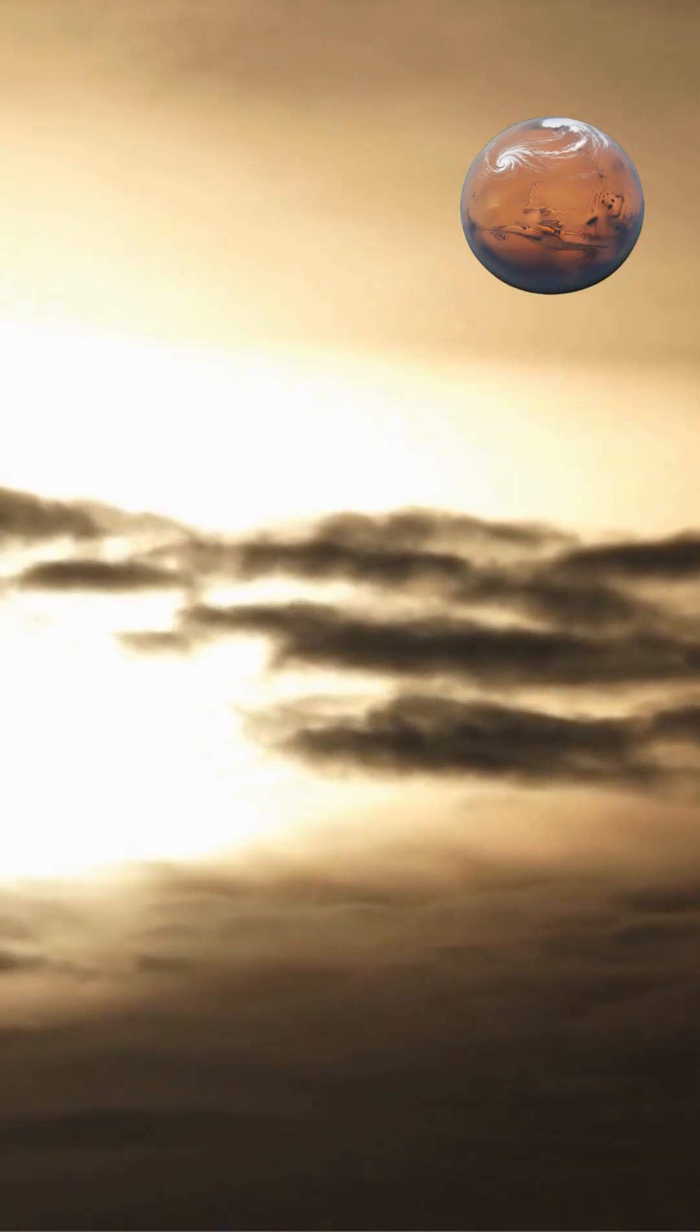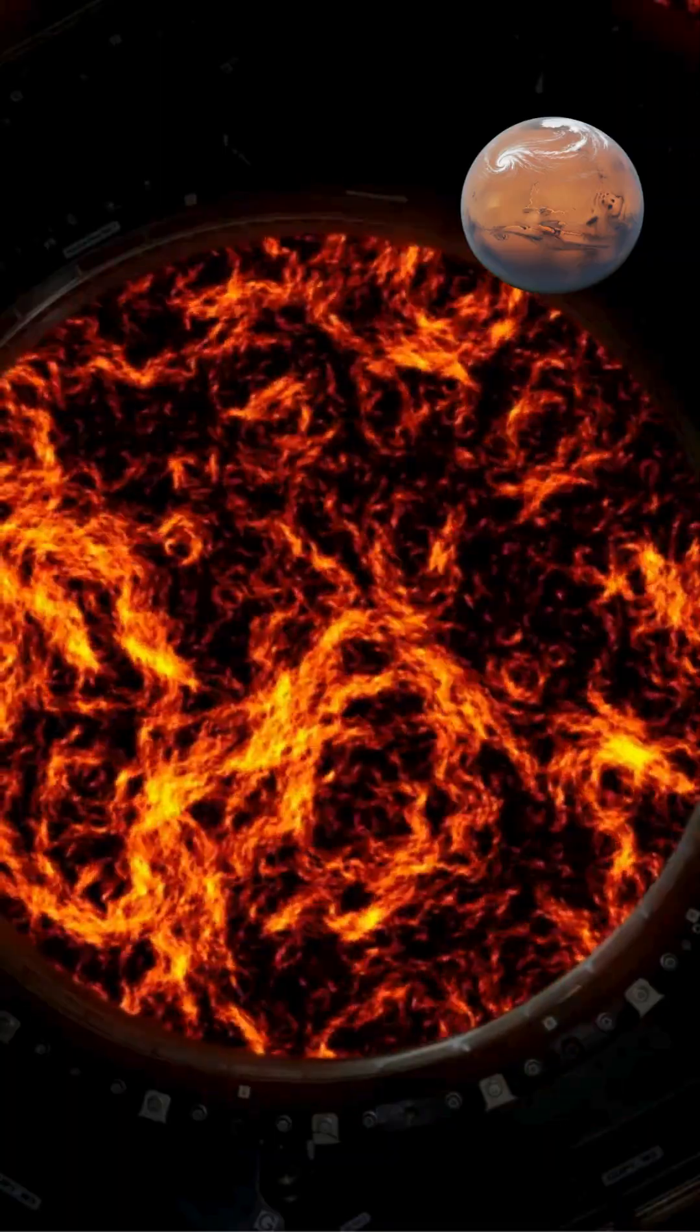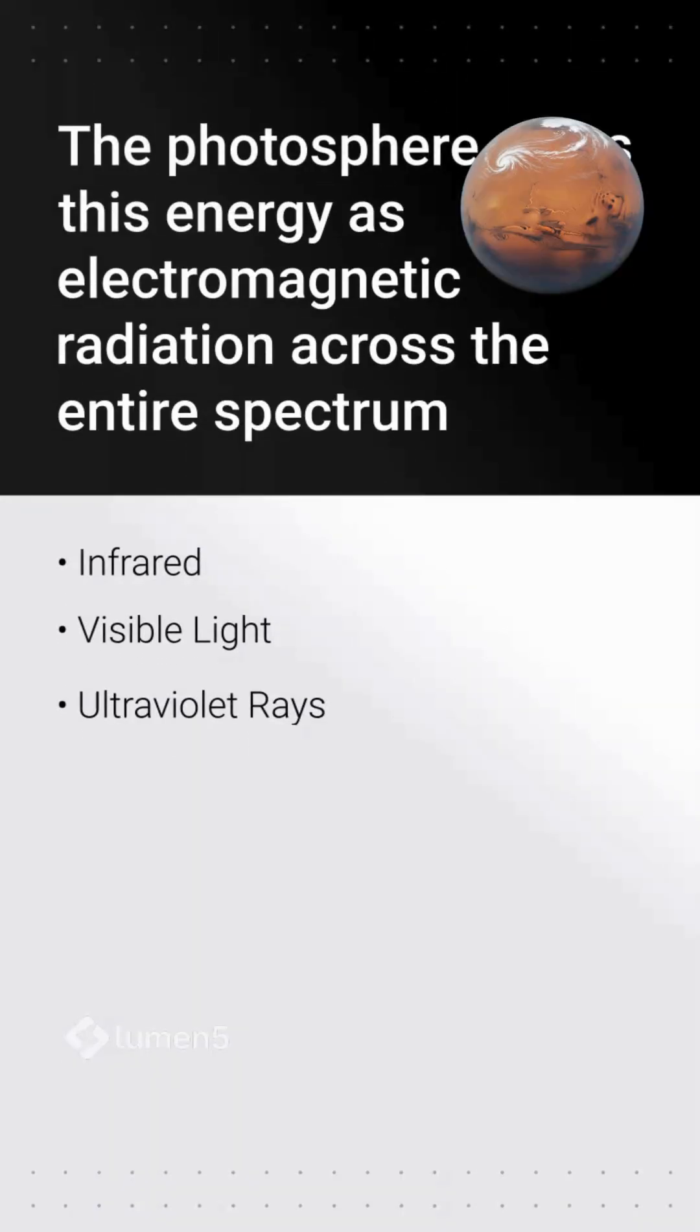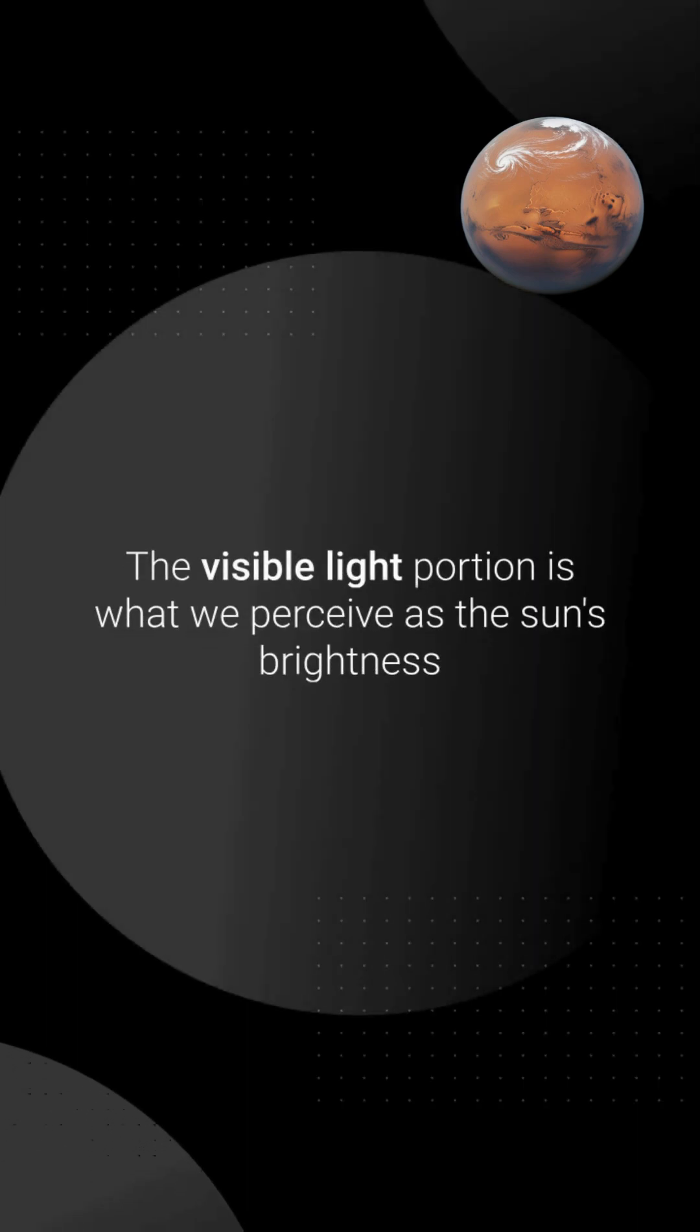This energy eventually reaches the sun's photosphere, the visible surface we observe from Earth. The photosphere emits this energy as electromagnetic radiation across the entire spectrum, from infrared to visible light to ultraviolet rays. The visible light portion is what we perceive as the sun's brightness.